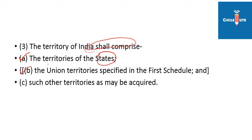The territory also includes the union territories — Delhi, Pondicherry, Jammu & Kashmir, Andaman — these union territories are the same in India.